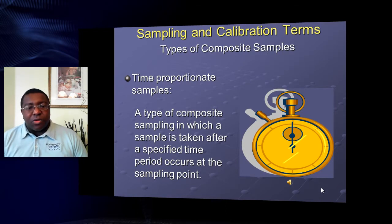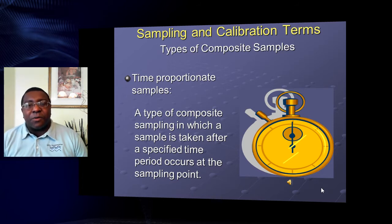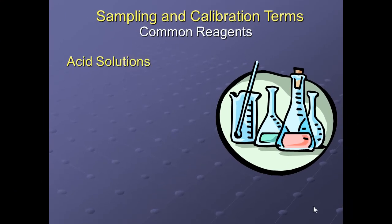Regulatory agencies prefer flow-proportionate sampling because with flow you get an accurate view of plant activity — during high flows you take more samples, during low flows fewer. Over a 24-hour cycle your composite sample is more representative of what's coming through your plant.